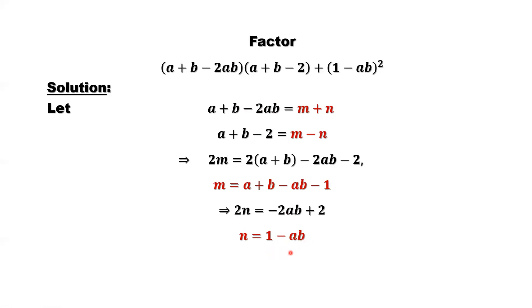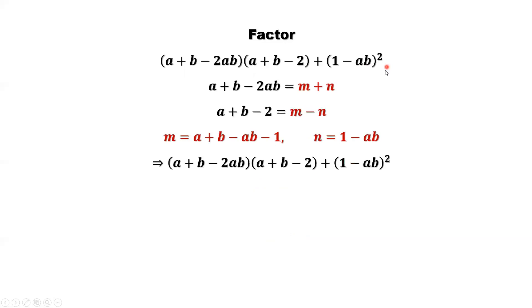So here we can replace now this part by m plus n. This part is m minus n. What is this part? 1 minus ab, which is n square. So here we can plug in here. First part, that's m plus n. Second part, that's m minus n. The last part is n square.